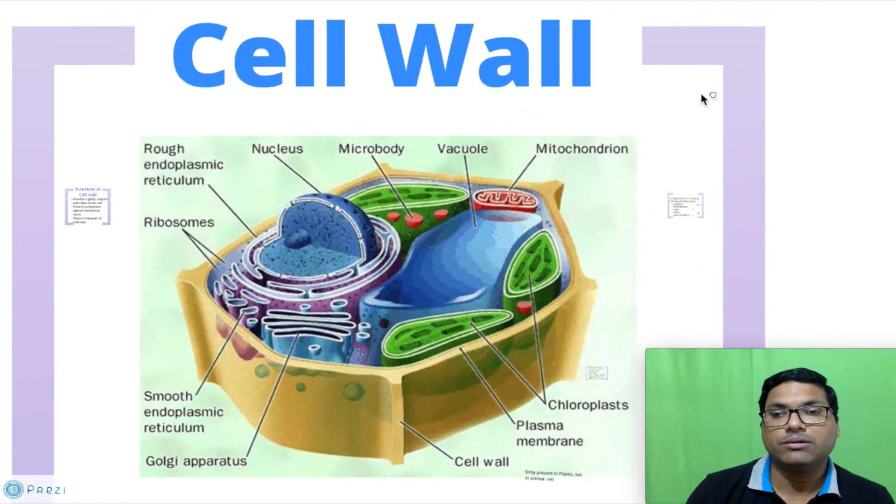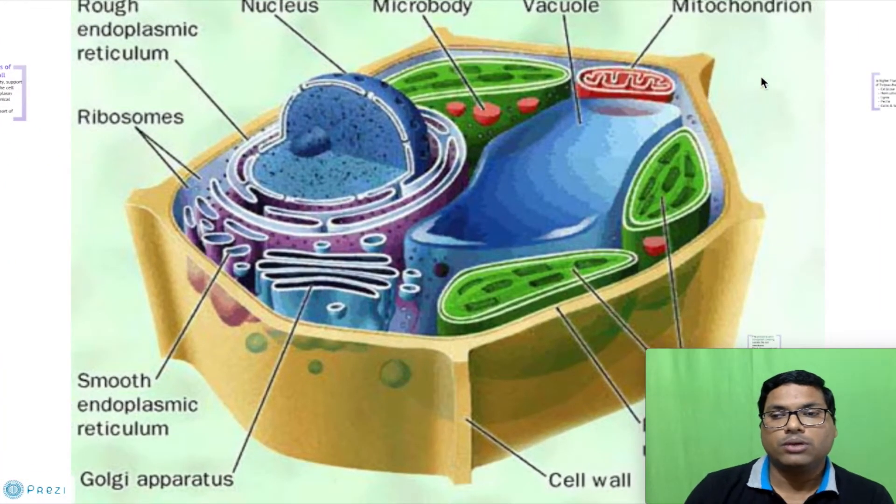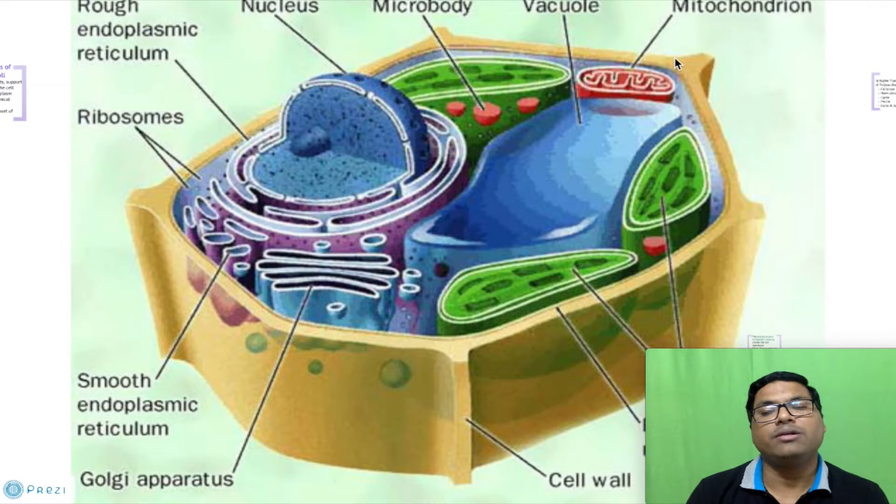Now we will see the first important cell organelle present in the eukaryotic cell called as cell wall. Now cell wall, keep this thing in mind, cell wall is only present in the plant cell and not in the animal cell.